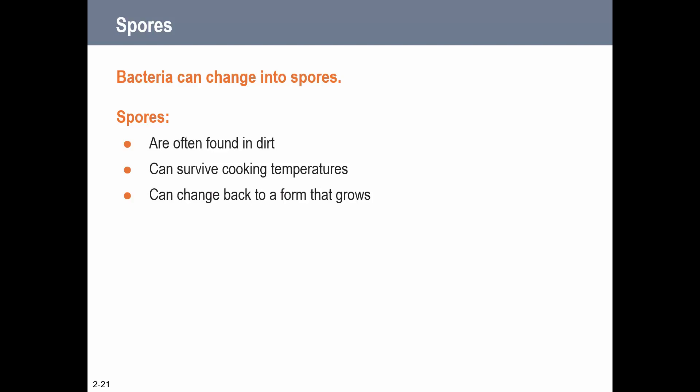One last unique thing about bacteria is that they can change into spores. Spores can be found in dirt, can survive cooking temperatures, and can then change back to a form that grows - this is something we worry about with botulism. That's why we have to be extra careful with foods that grow in the dirt, like root vegetables and onions, making sure we're not spreading that dirt on our cutting board.